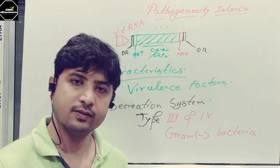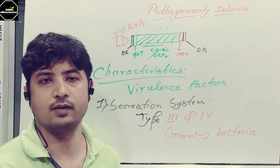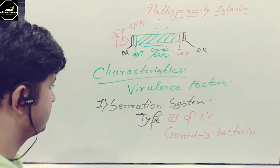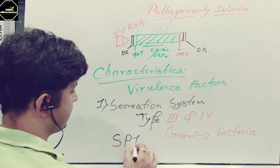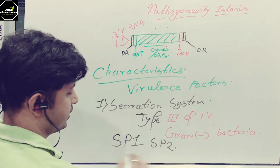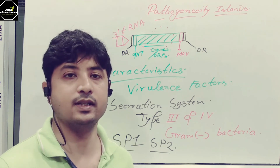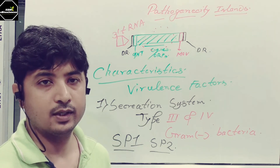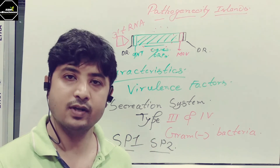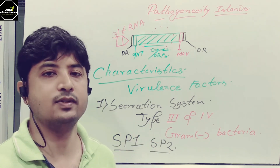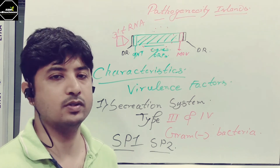There are several types of secretion systems but the most important ones are type 3 and type 4. For example, Salmonella typhimurium has two pathogenicity islands — SPI-1 and SPI-2. These are the names of two pathogenicity islands present in Salmonella typhimurium, and they are responsible for the secretion system as well as the factors responsible for adherence to the host and the mechanism of pathogenicity.